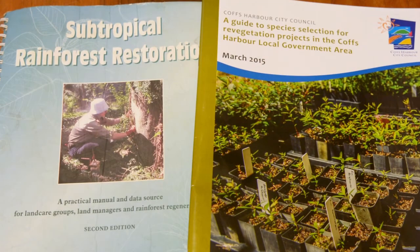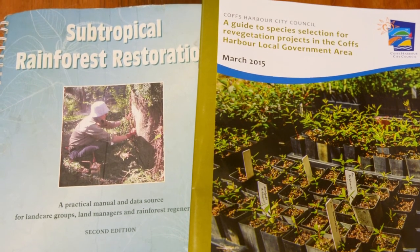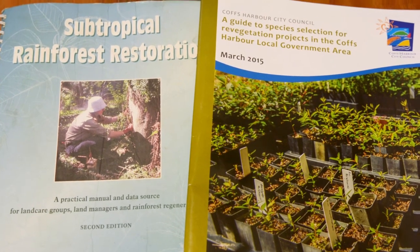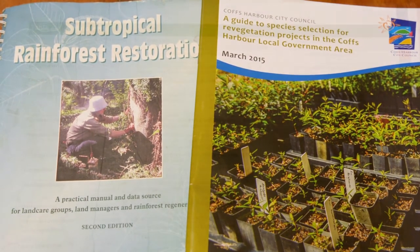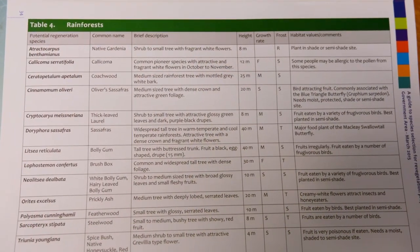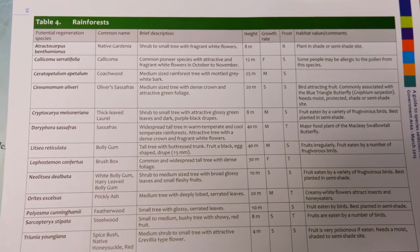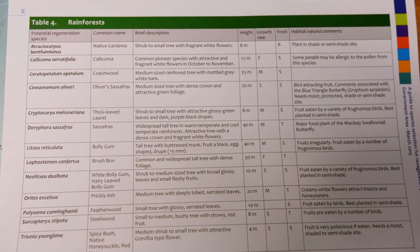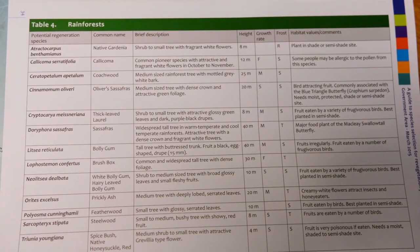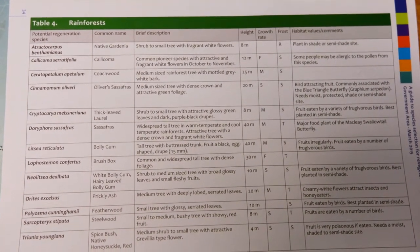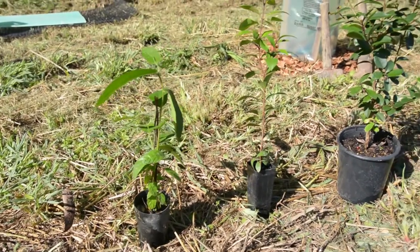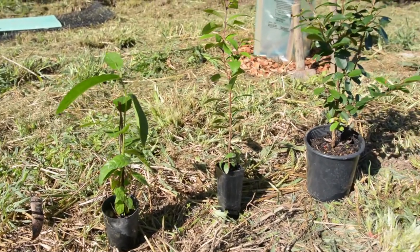When selecting your plants, refer to a local species selection guide or a restoration manual. Choose plants that are appropriate for the conditions on your site and also suitable for the target vegetation community you are trying to recreate.